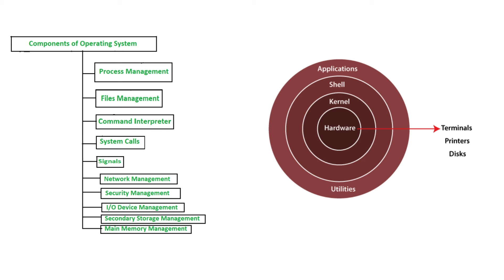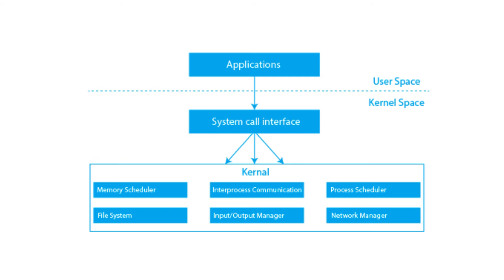Process management oversees the execution of applications, ensuring efficient CPU scheduling and multitasking. Memory management handles the allocation and deallocation of memory spaces, optimizing the use of RAM. The file system component organizes and controls how data is stored, retrieved, and managed on storage devices. Device drivers facilitate communication between the OS and hardware peripherals such as printers, keyboards, and monitors.